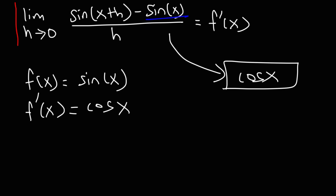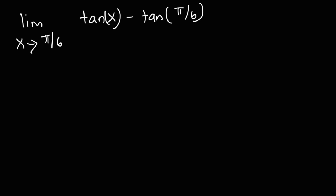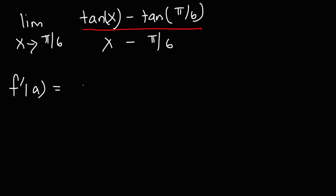So that's how you can evaluate limits that appear in this form. Now what about this problem? Let's say we have the limit as x approaches π/6 of tangent(x) minus tangent(π/6) divided by x minus π/6. This one is a little bit different than the previous two examples. The first thing we need to do is find the formula that corresponds to this expression. Here it is — this is the alternative definition of the derivative: f prime of a is equal to the limit as x approaches a of f(x) minus f(a) over x minus a.